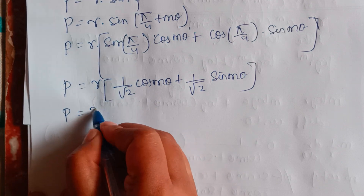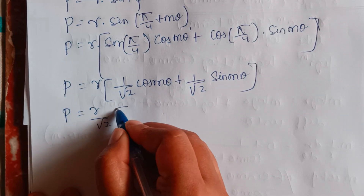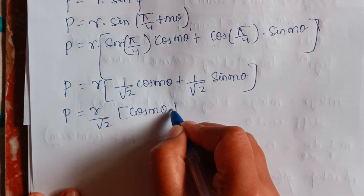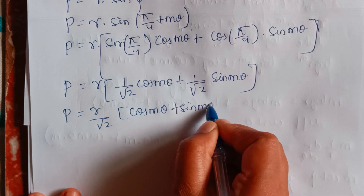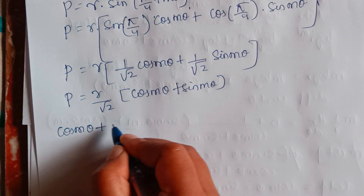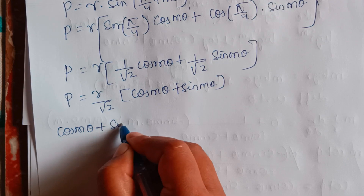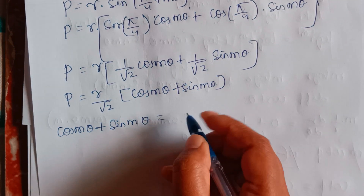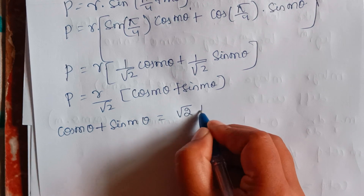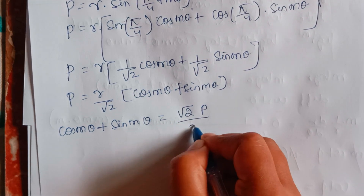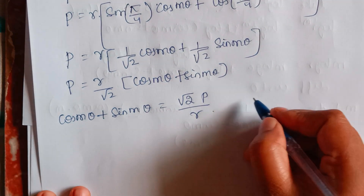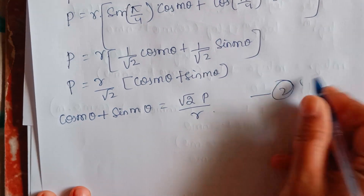Taking 1/√2 as common outside, it becomes p = r × (1/√2)(cos mθ + sin mθ). Rearranging, we find that cos mθ + sin mθ = √2p / r. Let us consider this as equation 2.